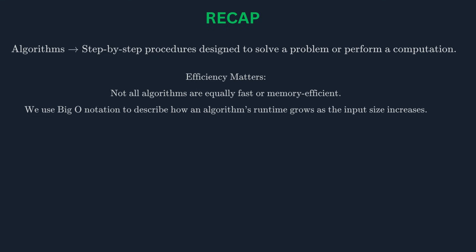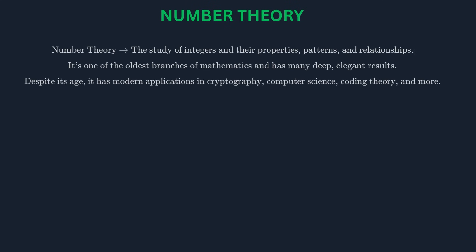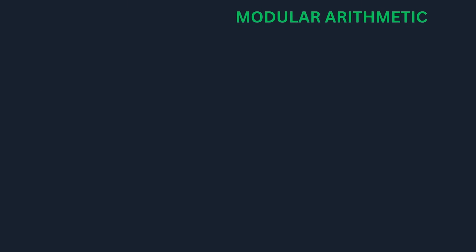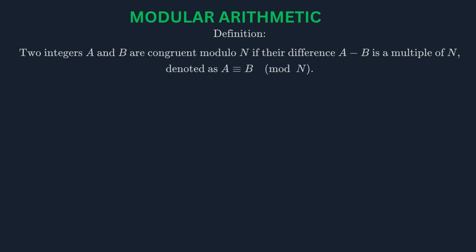Our final topic is number theory. This is the study of integers and their properties. It's one of the oldest and most beautiful branches of mathematics, and it has surprising applications in the modern world. We've already seen one concept from number theory: the greatest common divisor. Another fundamental concept is modular arithmetic. Modular arithmetic is often called clock arithmetic. We say that two integers A and B are congruent modulo N if their difference A - B is a multiple of N. In other words, they have the same remainder when divided by N.